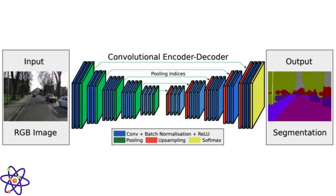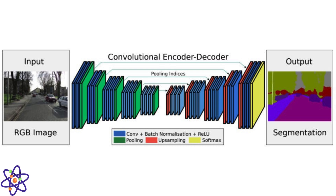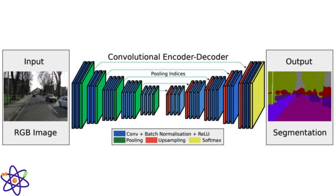Semantic segmentation involves assigning specific labels to each pixel in an image, effectively dividing the image into regions corresponding to different objects or classes. It provides a detailed understanding of the spatial distribution of objects in an image and is essential for applications like autonomous navigation, medical image analysis, and scene understanding in robotics. Another area is motion analysis and 3D computer vision.